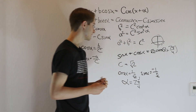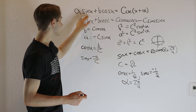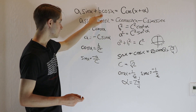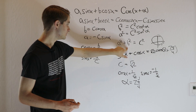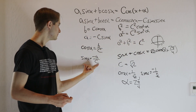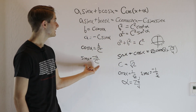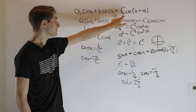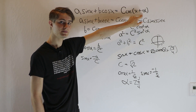And just like that, we can take a sine x plus b cosine x, use a squared plus b squared equals c squared and these two trig expressions to get it into the form c cosine of x plus alpha.